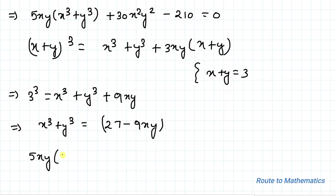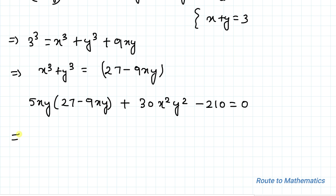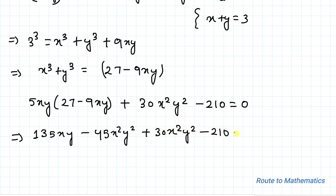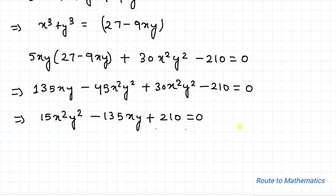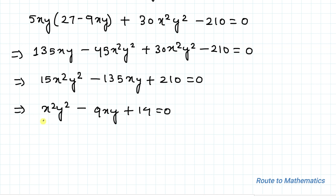Substituting x³ + y³ = 27 − 9xy into our equation: 5xy(27 − 9xy) + 30x²y² − 210 = 0, which gives 135xy − 45x²y² + 30x²y² − 210 = 0, simplifying to 15x²y² − 135xy + 210 = 0. Dividing by 15: x²y² − 9xy + 14 = 0.